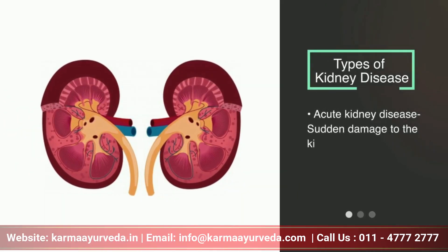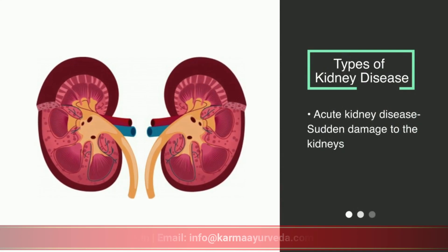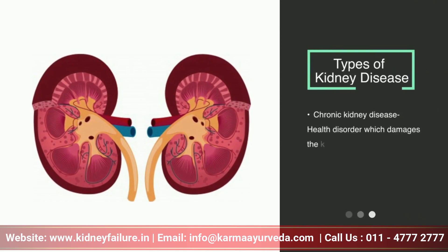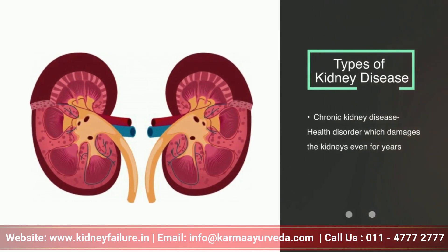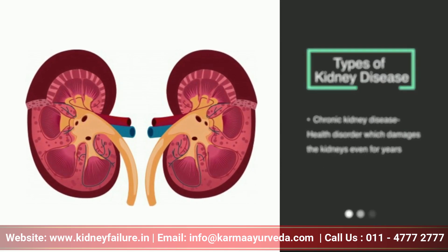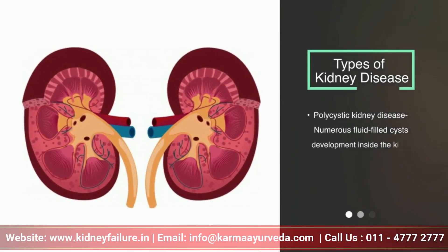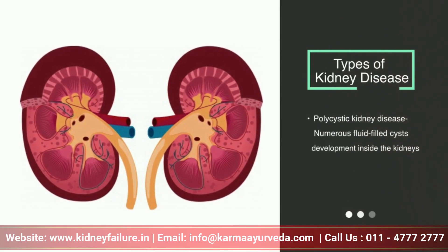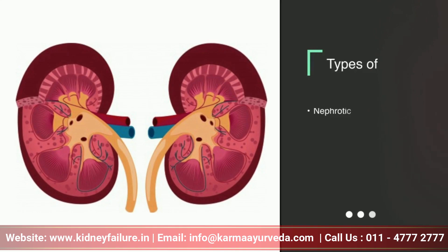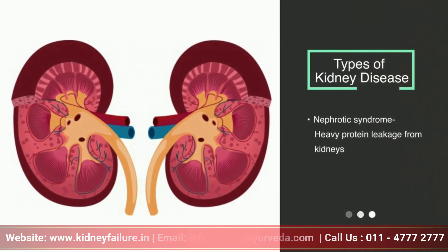There are different types of kidney diseases. Acute kidney disease, where there is a sudden damage to the kidneys. Chronic kidney disease, a health disorder which damages the kidneys over years. Polycystic kidney disease, where numerous fluid-filled cysts develop inside the kidney. Nephrotic syndrome is a problem when heavy protein leakage occurs from your kidney.